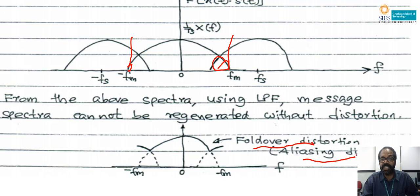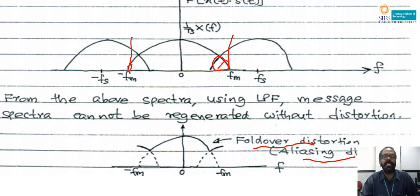The reason it is called aliasing distortion is that the distortion is generated by the alias of X(f): X(f − fs) is the alias of X(f), and X(f − fs) is creating distortion with X(f). This indicates that when fs < 2fm, the original signal cannot be regenerated without distortion. We can conclude: if fs ≥ 2fm, the original signal can be regenerated without any distortion; if fs < 2fm, the signal cannot be regenerated without distortion.